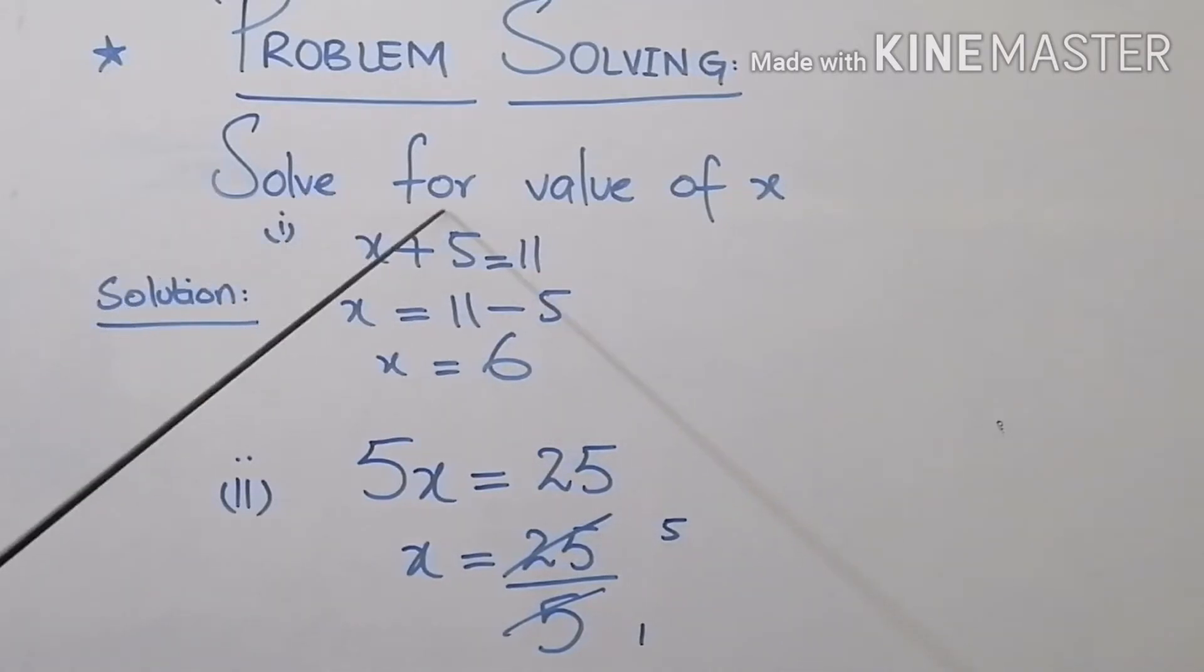First example is solve for the value of x. This is a simple little linear equation that is x plus 5 equals to 11. x is equal to, I am taking this 5 from the left hand side to the right hand side, 11 minus 5, x is equal to 6. So this was a simple equation in which we were about to find the value of x.